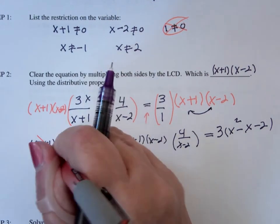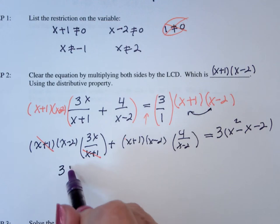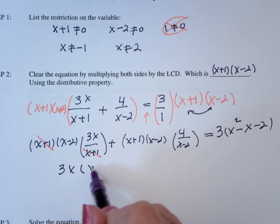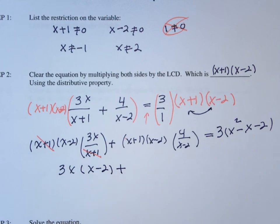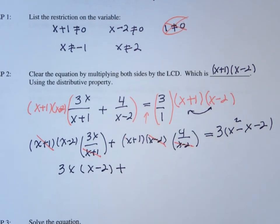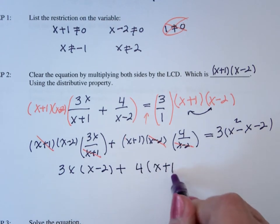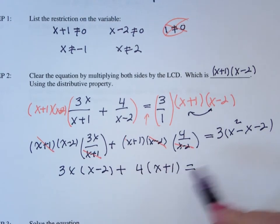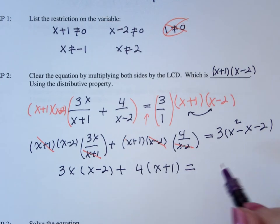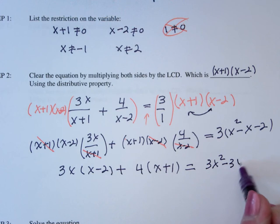Notice here, x plus 1 reduces out. So you're going to have 3x times x minus 2 plus... The x minus 2's reduce out. You have 4 times x plus 1 equals... Now, I'm going to... Well, I can multiply through by 3. This is 3x squared minus 3x minus 6.